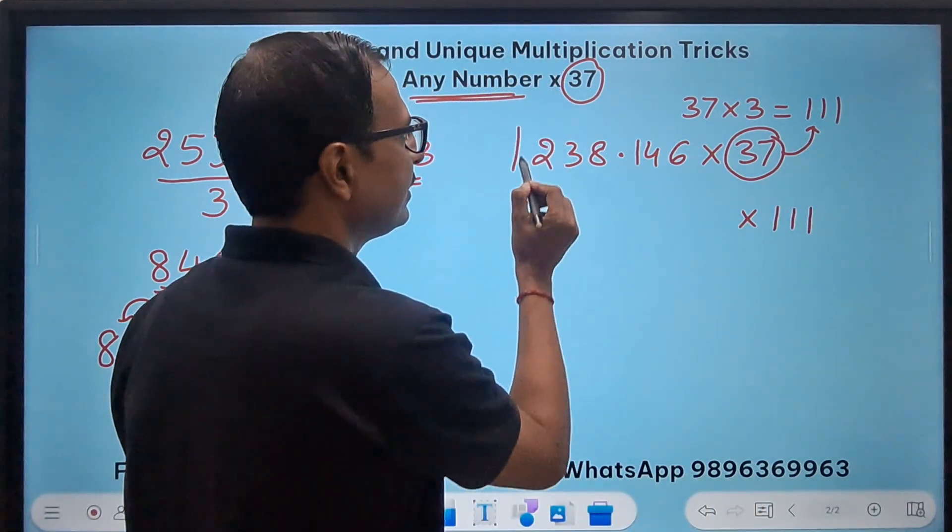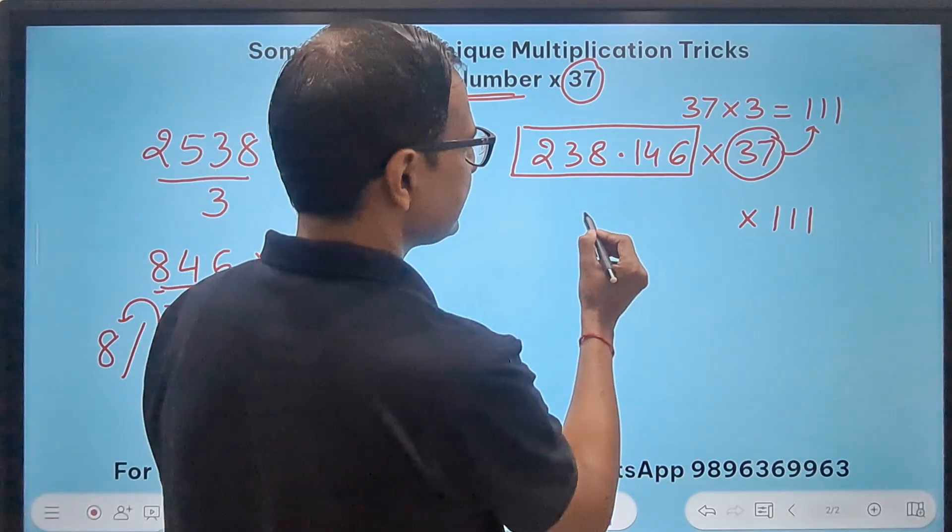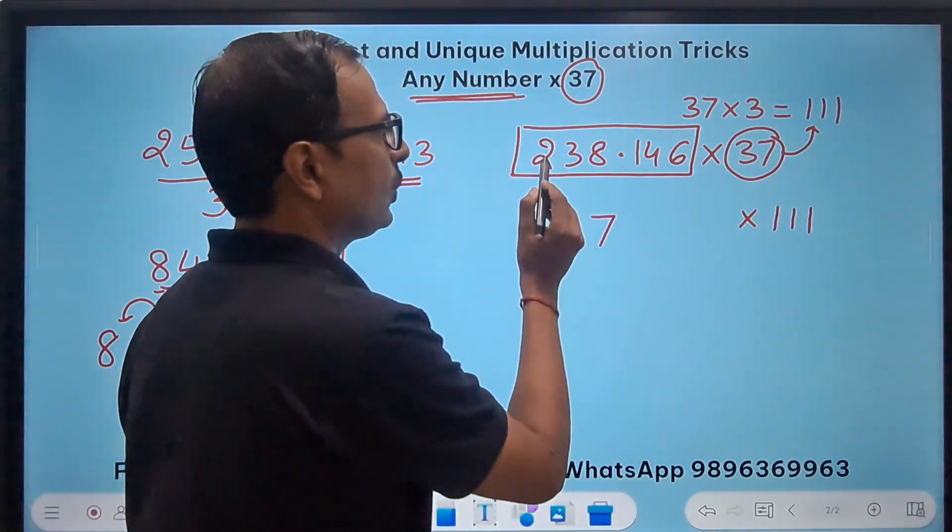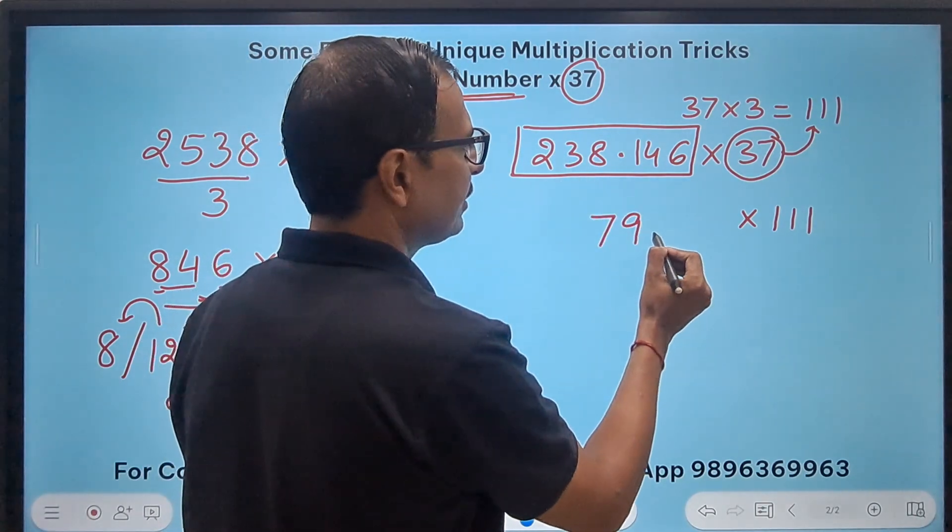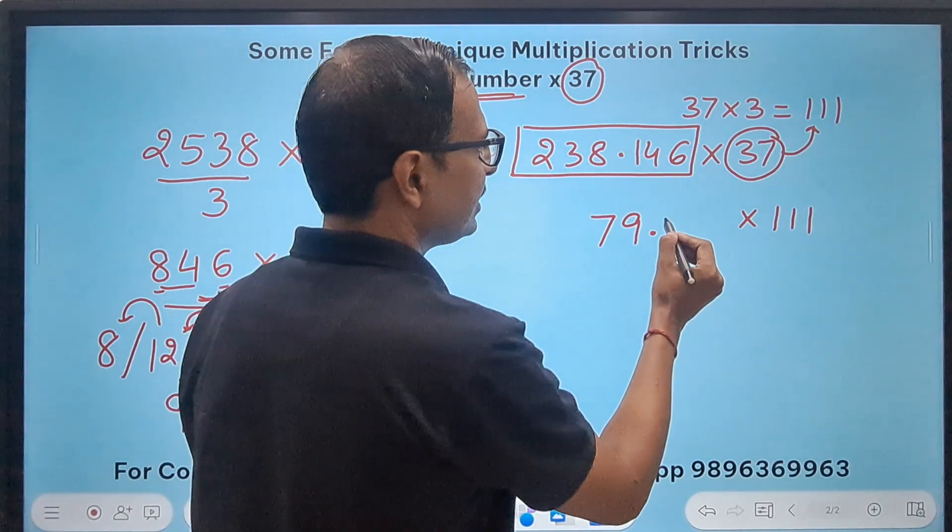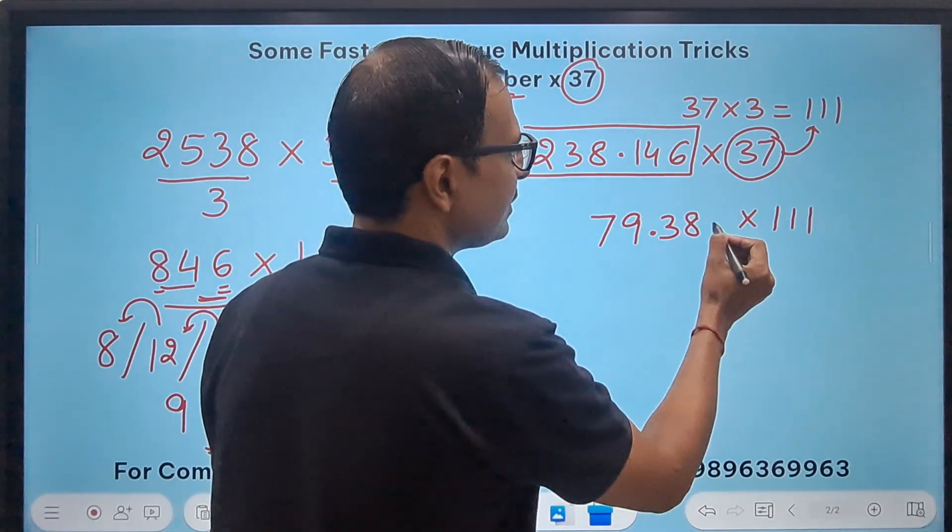So you all know we have to convert this number as triple 1 so that multiplier is going to be triple 1 after you divide this number by 3. So 3, 7's are 21 so 28, 3, 9's are 27 so 11, 3, 3's are 9, 24 means 8 and 6 means 2.